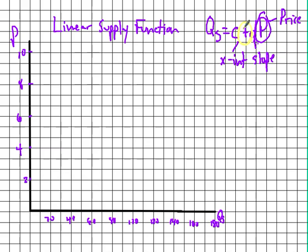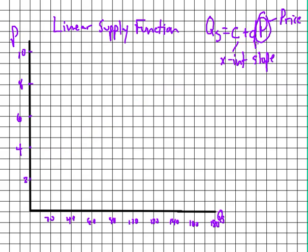Notice there's a plus sign in front of the slope. That tells you one definite thing: this is an upward-sloping curve — it has a positive slope. Let's go ahead and plot some of these out with an example.